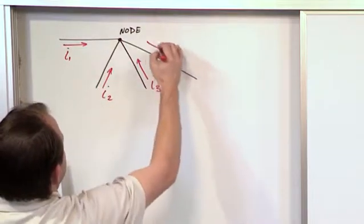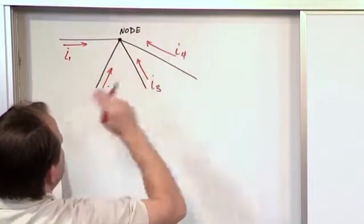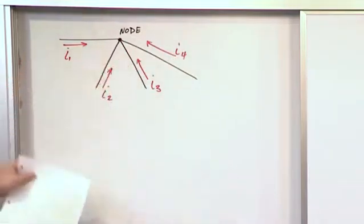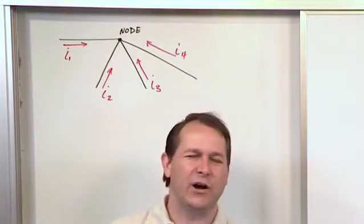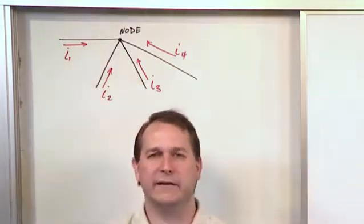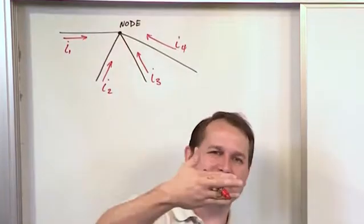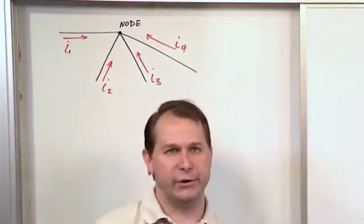This one we're going to call I4, and here we've drawn them all going into the node, but you all know from dealing with node voltage that if we solve this, some of these things might be negative or positive. Basically what it means is the current going into a node must equal the current going out of a node.